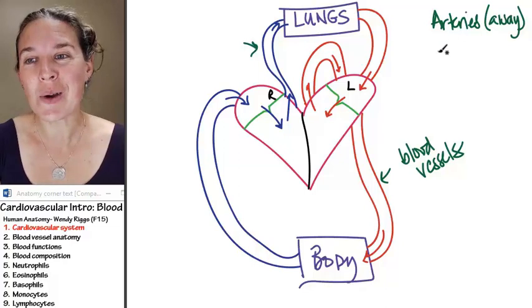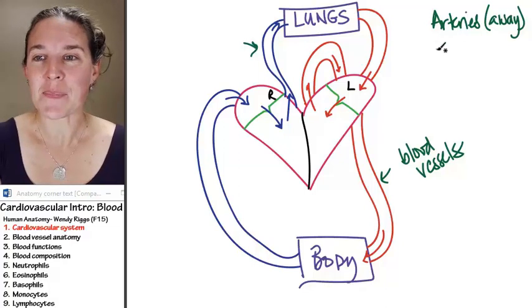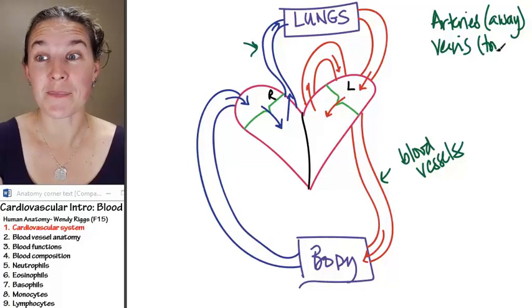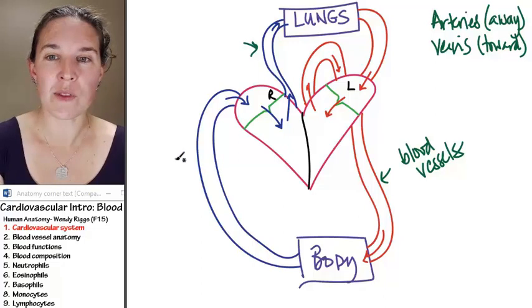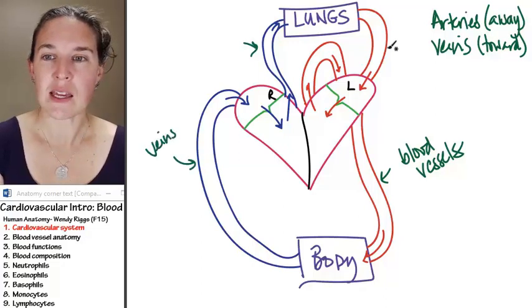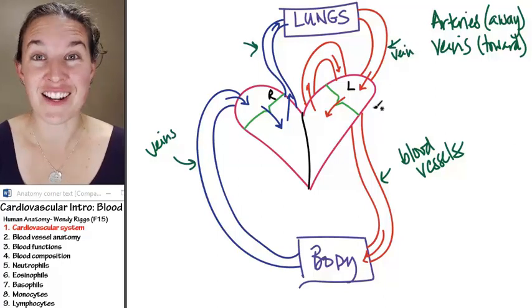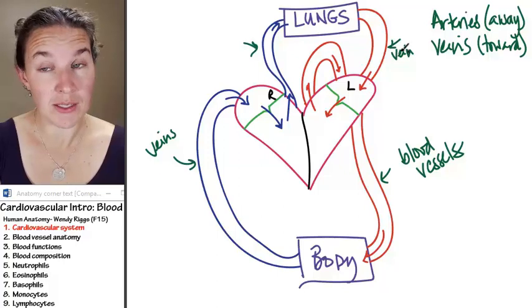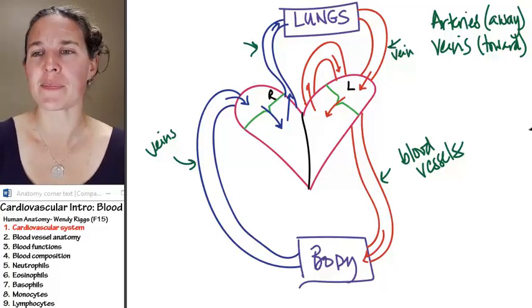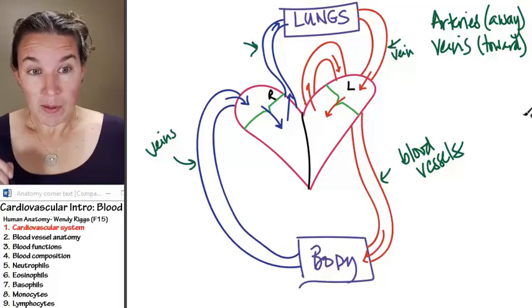You also have veins. Veins carry blood to the heart. And so these guys are veins. Here is a vein that's carrying oxygenated blood toward the heart from the lungs. Most veins carry deoxygenated blood.